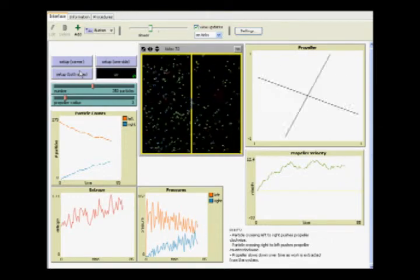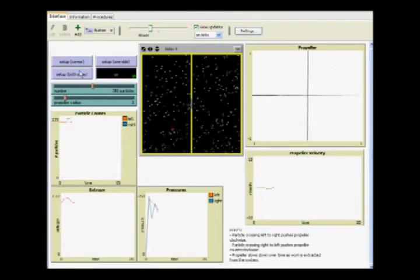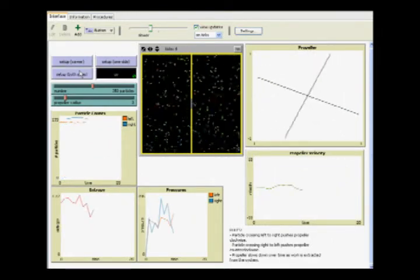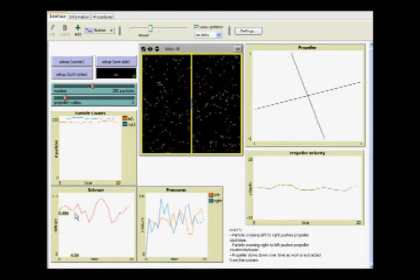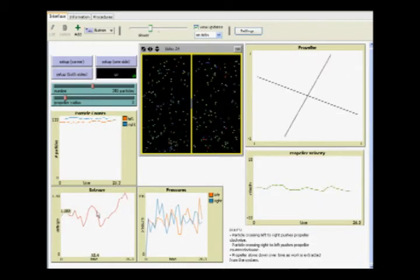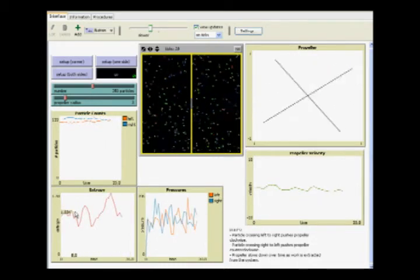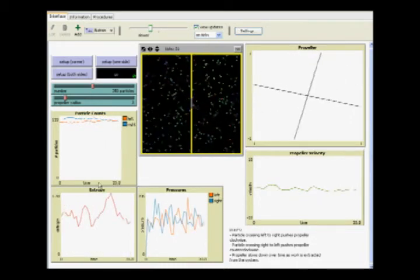What happens if we start at maximum entropy? That's pretty easy. We simply distribute the molecules evenly on either side. As the simulation runs, there is no obvious upward trend in entropy as there was before. Entropy varies around a relatively steady mean of about 1.